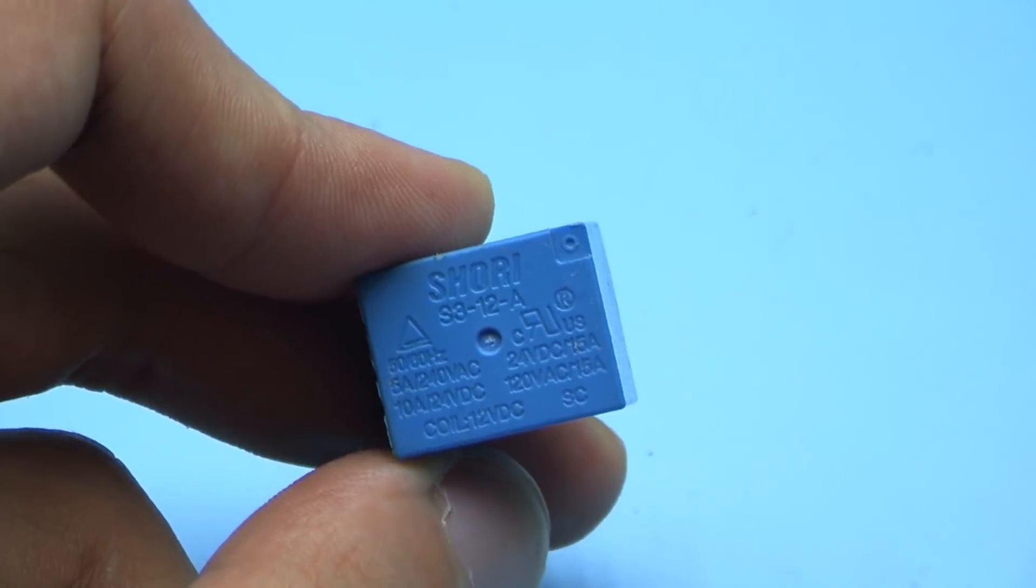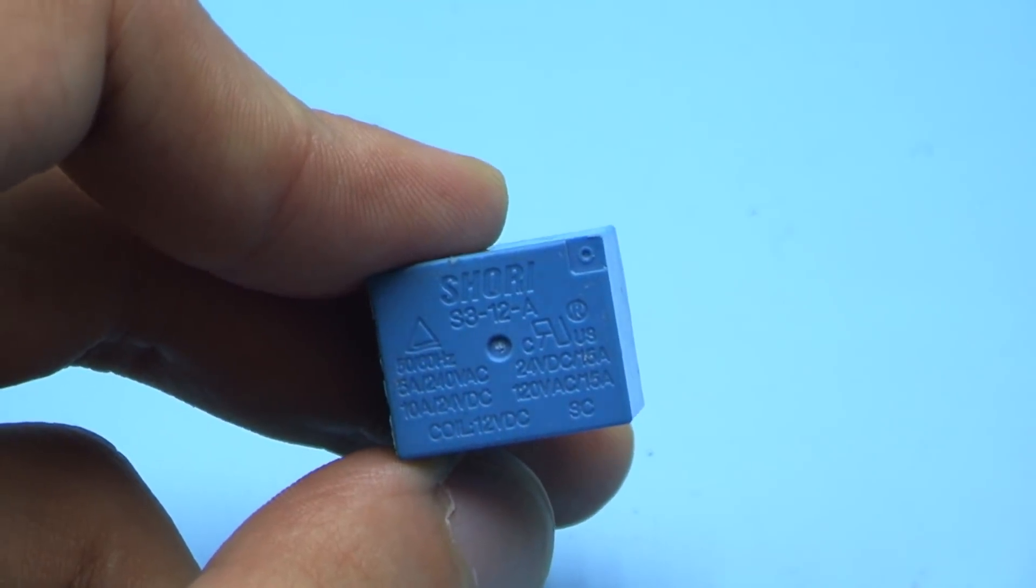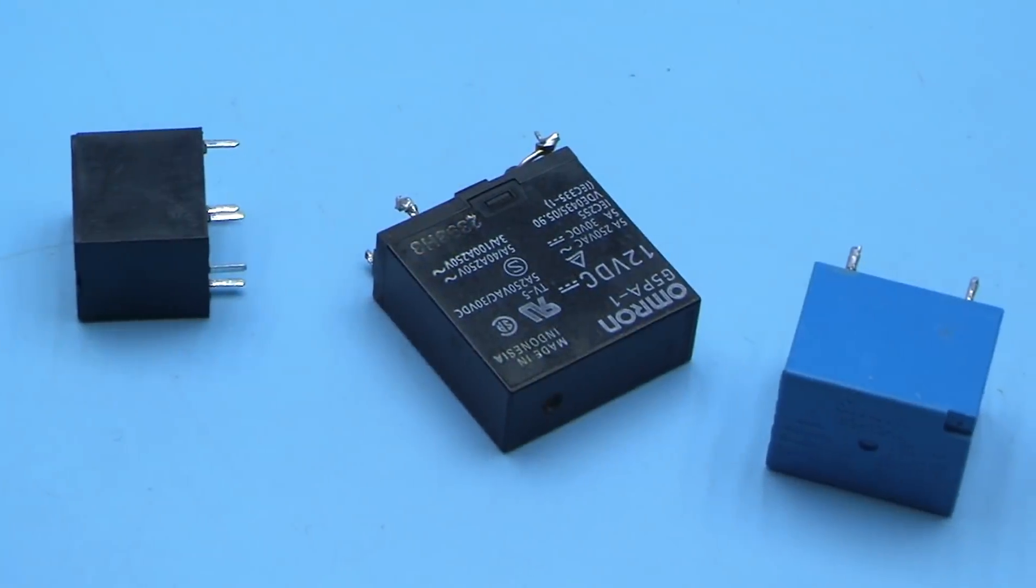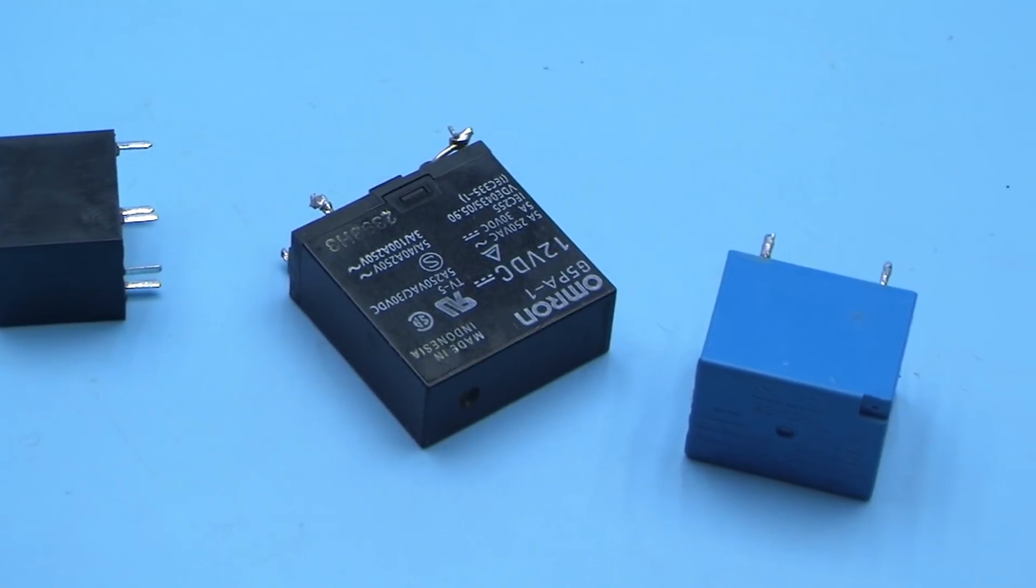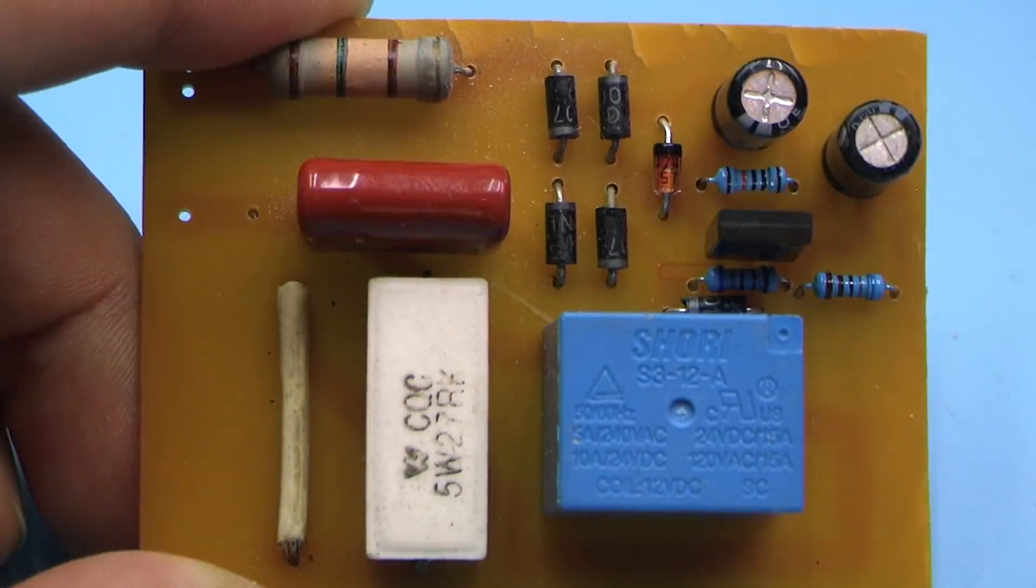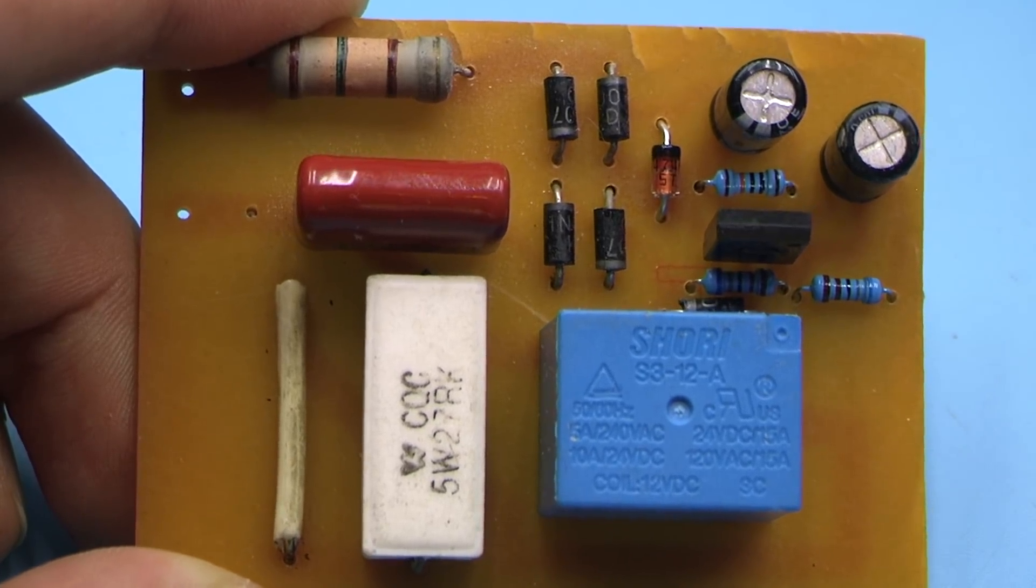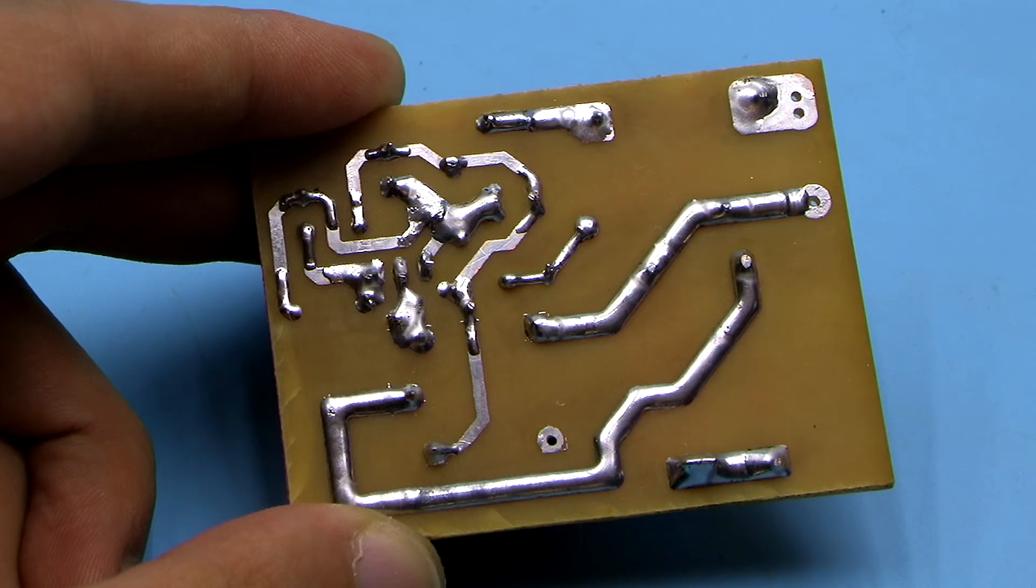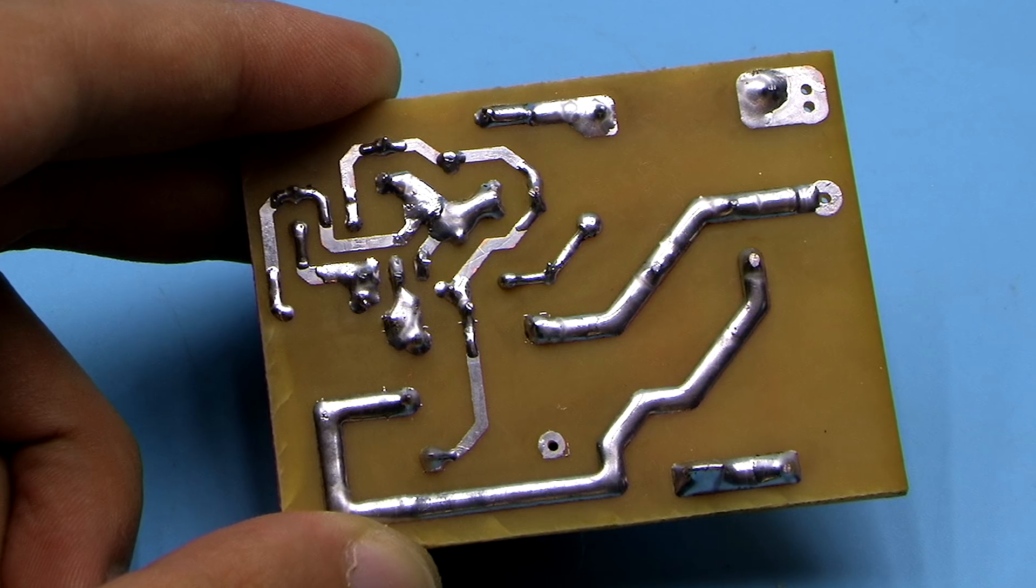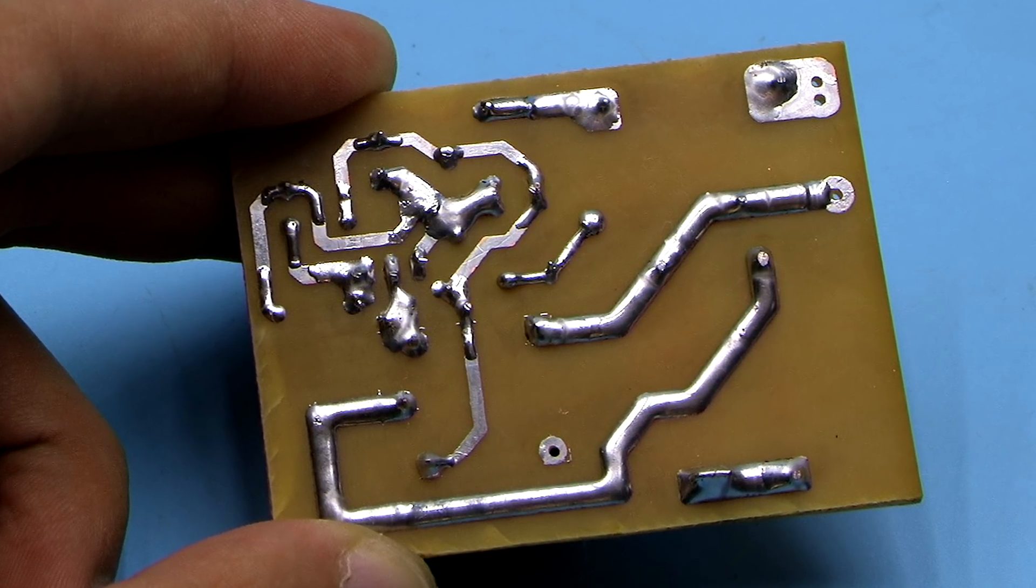Relay is with a coil of 12 volts. The current of the relay depends on your needs. If you use a good 10 ampere relay, then you can connect loads with a power of about 2 kilowatts. Power tracks on the printed circuit board must be strengthened with solder.